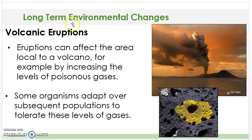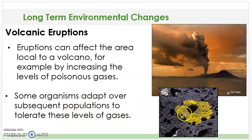The next type of long-term environmental change is volcanic eruptions. Eruptions can affect the area local to a volcano, for example by increasing the levels of poisonous gases. Some organisms adapt over subsequent populations to tolerate these levels of gases. This organism shown here is called a lichen.